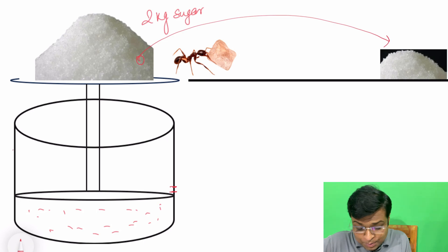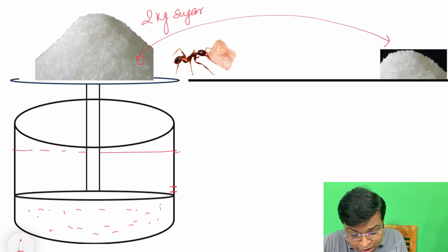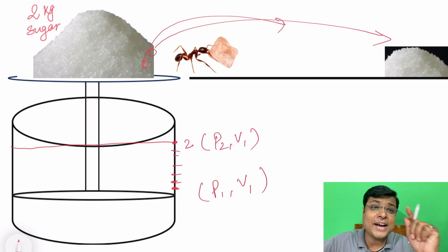So what will happen? Finally this piston will reach here, but this process will take infinite time, maybe one year or maybe two years or infinite time. So here also system moves from same state 1 to 2, but the difference is the process was very slow.